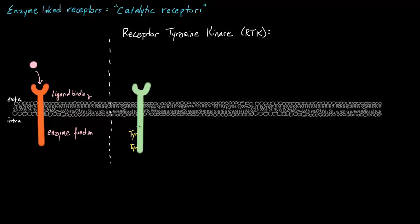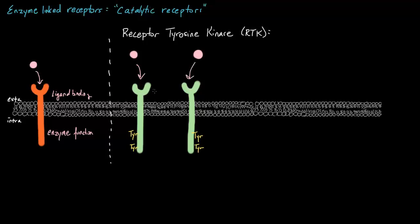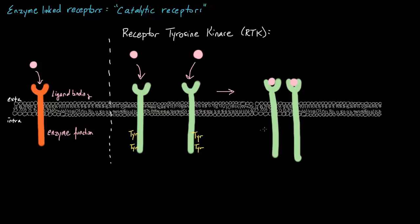Let's talk in more detail about this process. Receptor tyrosine kinases occur in pairs — if you find one RTK, you'll find another one nearby. We have our tyrosine down here and our extracellular signal out here. When this signal binds into the ligand-binding site, what's unique about RTKs is that these two pairs come together and act together. When a signaling molecule binds to an RTK, it causes neighboring RTKs to associate with each other, forming what we call a cross-linked dimer.